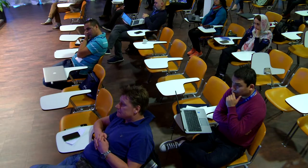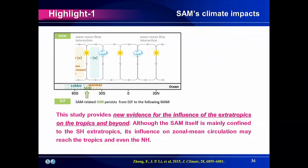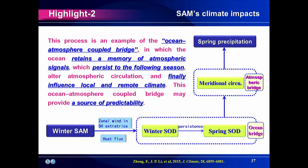In summary, this study provides new evidence for the influence of extratropics on the tropics and beyond. Although the SAM itself is mainly confined to the Southern Hemisphere, its influence on zonal mean circulation may reach the tropics and even the Northern Hemisphere. This process is an example of an ocean-atmosphere coupled bridge in which the ocean retains a memory of the atmospheric signal, persisting to the following season, altering atmospheric circulation and finally influencing local and remote climate.